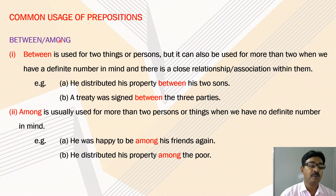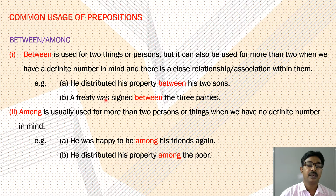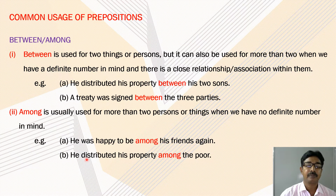'Between' and 'among': 'between' is used for two things or persons, but it can also be used for more than two when we have a distinct number in mind and there is a close relation or association among them. For example: he distributed his property between his two sons; a treaty was signed between the three parties. 'Among' is usually used for more than two persons or things when we have no definite number in mind. For example: he was happy to be among his friends again; he distributed his property among the poor.